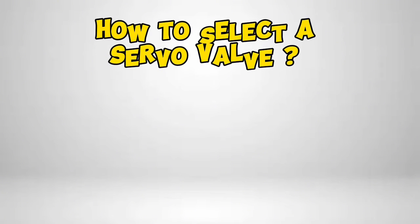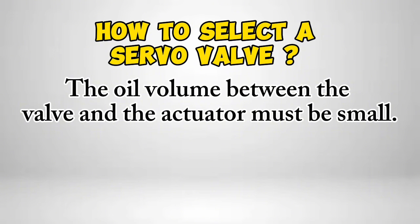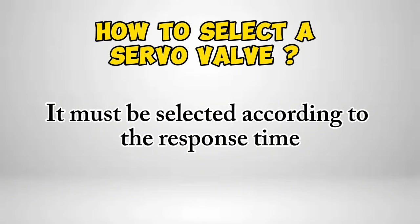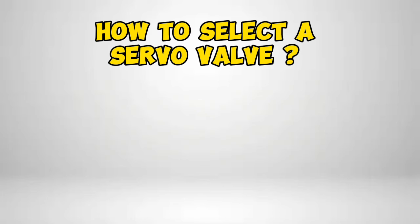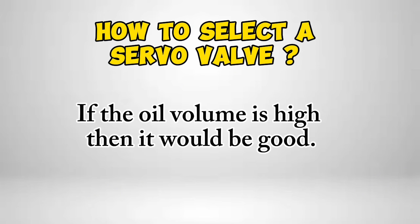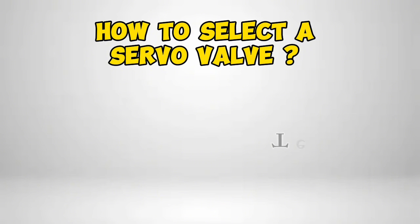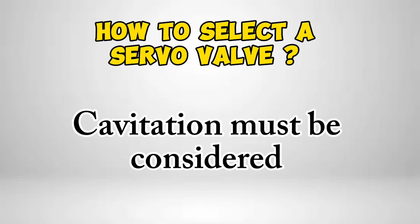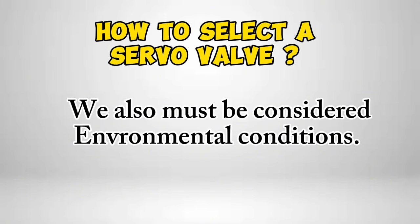How to select a servo valve. The oil volume between the valve and the actuator must be small. It must be selected according to the response time. We must consider the flow pressure gain. If the oil volume is high, then it would affect performance. Other factors to consider include installation position, temperature range, vibration, cavitation, and environmental conditions.